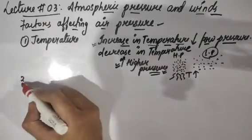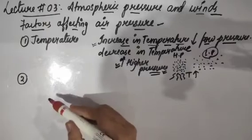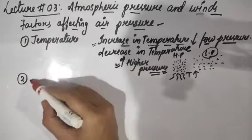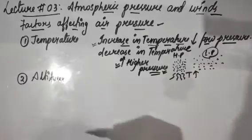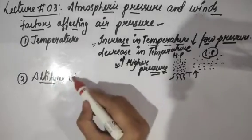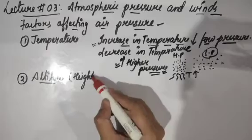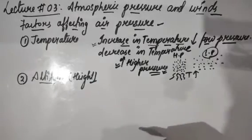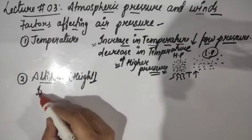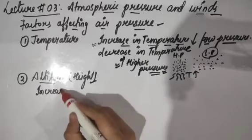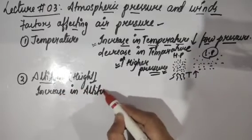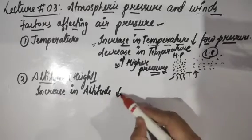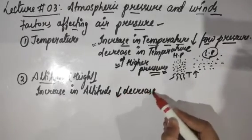The second important factor that we have to understand is something called altitude. We have already discussed this factor earlier - altitude means height. So how does altitude affect the pressure? An increase in altitude means a decrease in pressure.